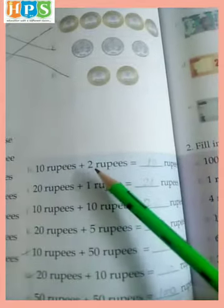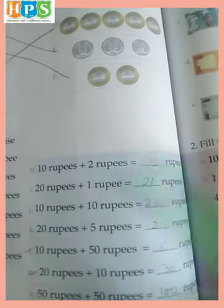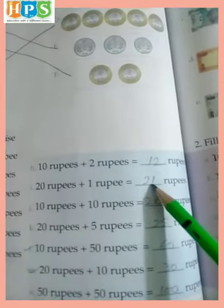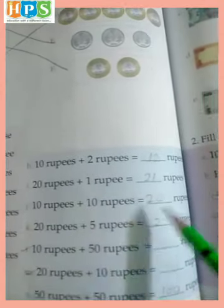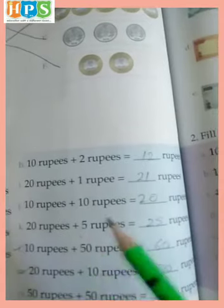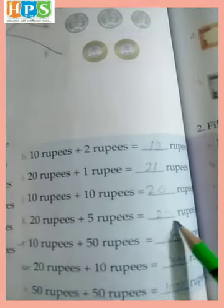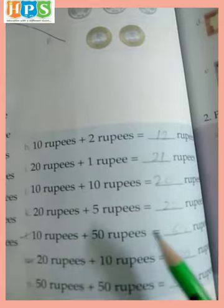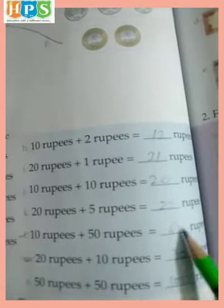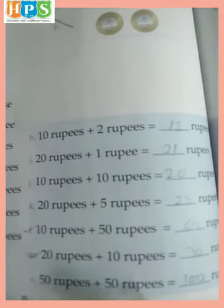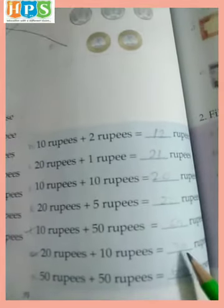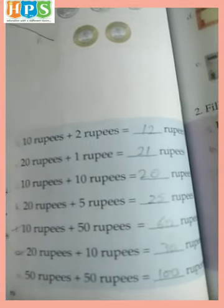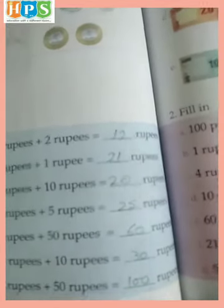10 plus 2 equals 12 rupees. 20 plus 1 equals 21 rupees. 10 plus 10 equals 20 rupees. 20 plus 5 equals 25 rupees. 10 plus 50 equals 60 rupees. 20 plus 10 equals 30 rupees. 50 rupees plus 50 rupees equals 100 rupees.